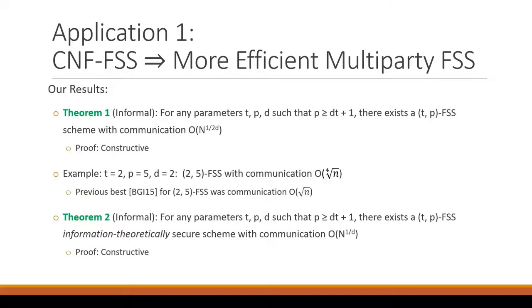So our main results for the first application is that for any parameters, such that the number of parties is bigger than or equal to the threshold times some parameter D plus 1, then there is a T,P FSS scheme that has communication roughly N to the 1 over 2D. And we demonstrate how to construct such a scheme. So as an example, in the T equals 2 and P equals 5 case, with D equals 2, this creates a threshold 2, five-party FSS protocol with communication fourth root of N, which matches the previous result, but for a much smaller number of parties. In general, as the number of parties go up, the easier it is to construct such protocols.